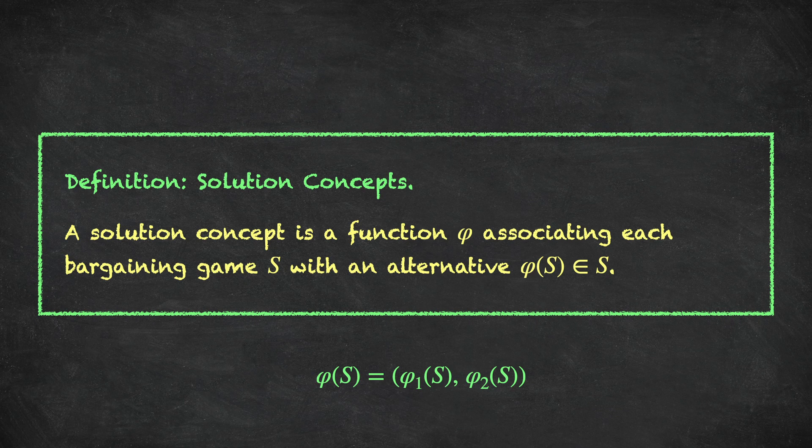Always disagree — of course, it's not a particularly nice solution concept. So what would a nice solution concept look like? Well, we're going to proceed axiomatically. That is, we're going to write down a list of properties that we would like our solution concept to satisfy. We're not modelling the bargaining process here; rather, we're trying to write down a list of properties of the outcomes of whatever a rational bargaining procedure might look like.